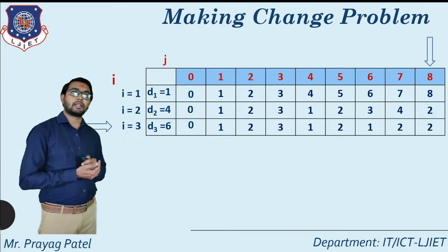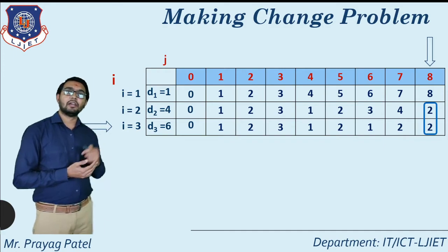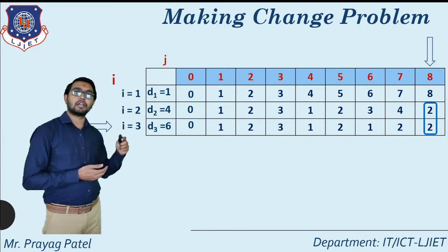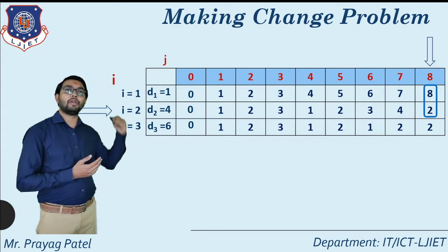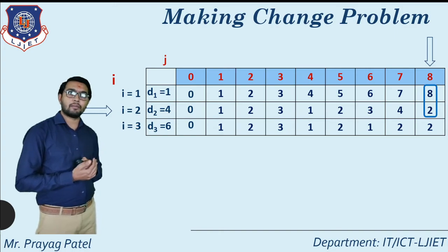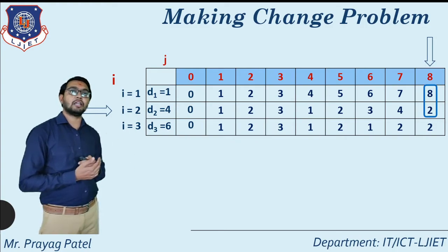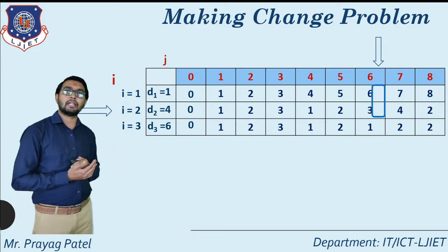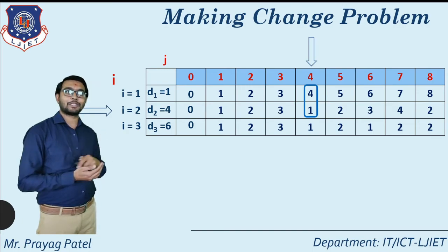Now we perform backtracking of this algorithm. We start from the last location C[3][8] and compare it with the upper location. Compare value 2 at C[3][8] with 2 at C[2][8]: both values are equal, so move upward. Compare 2 with 8 at C[1][8]: they are not the same. If both are the same we move upward, but if different we select j minus di.